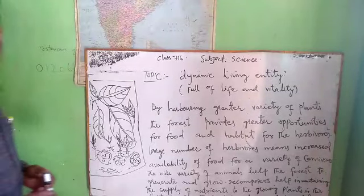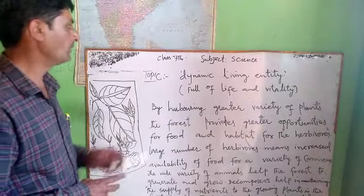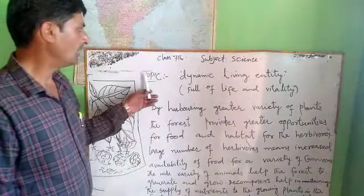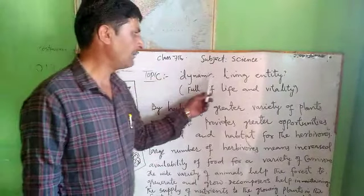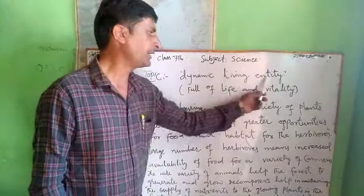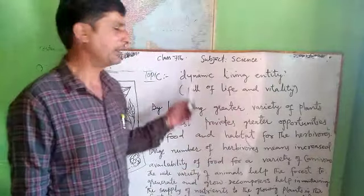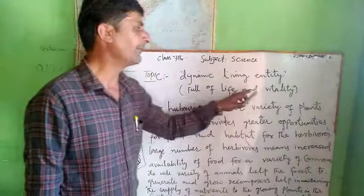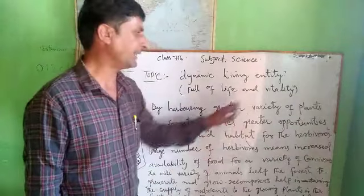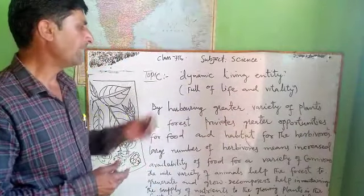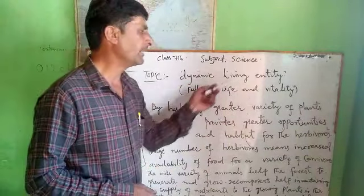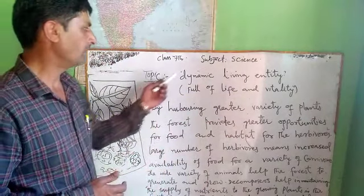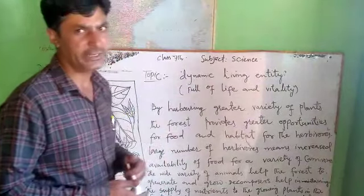Dear students, Assalamu alaikum. It is class 7, subject science. Our today's topic is Dynamic Living Entity. Dynamic Living Entity means full of life, vitality and wealth. What is Dynamic Living Entity?